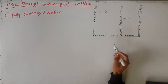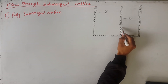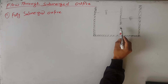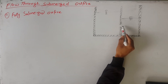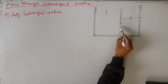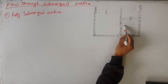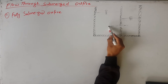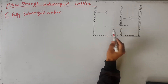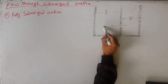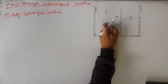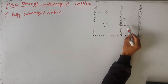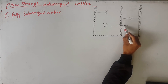We will do the derivation of discharge through the fully submerged orifice. First of all, we will consider some variables. Let this be the center of the orifice. We will label point 0.1 on the upstream side and point 0.2 on the downstream side.